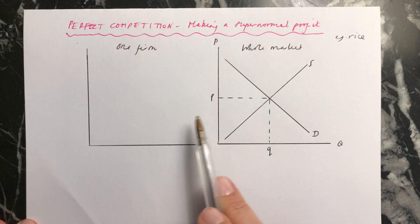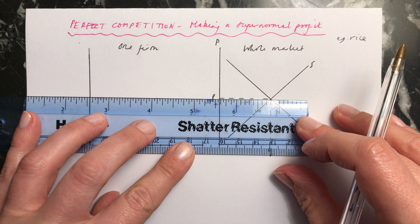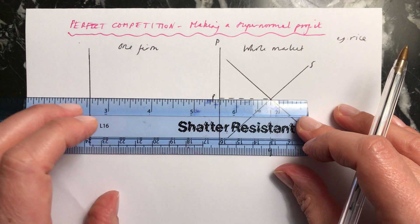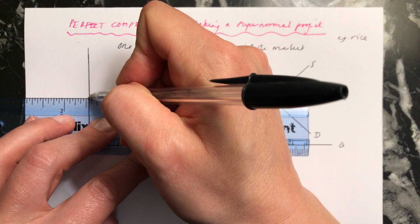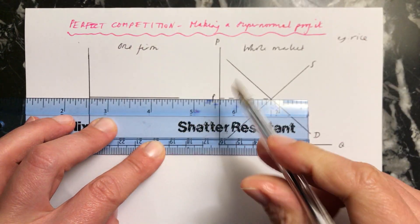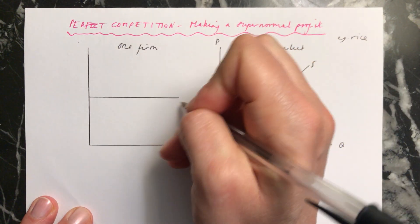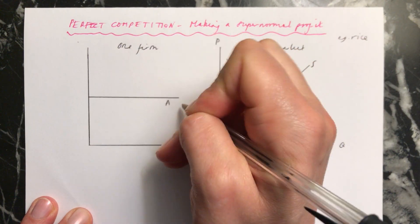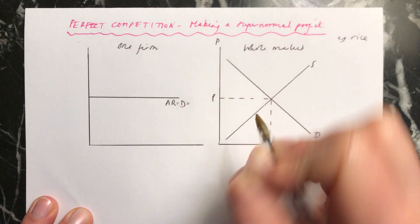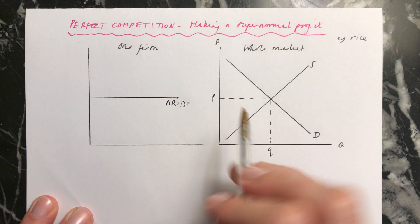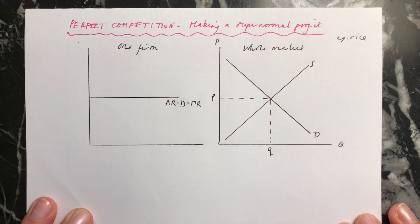For the firm, their average revenue and demand curve is where the price is because they are price takers. So follow this price across here — this is average revenue, and we know that that's demand. And because every single unit is sold at this price, it's also equal to the marginal revenue.